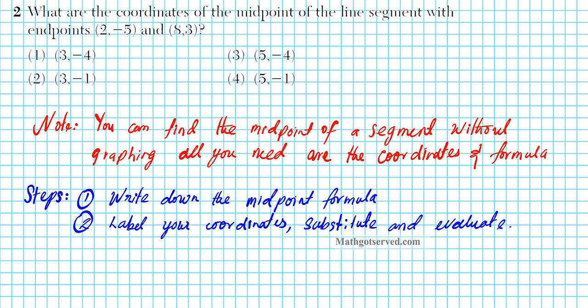All right, let's take a look at problem number 2. It reads: what are the coordinates of the midpoint of the line segment with endpoints 2, negative 5 and 8, 3? One thing you want to note when finding midpoints of a segment given the coordinates of the endpoints is that you do not need a visual. You do not need to graph the segment in order to determine what the midpoint is. You can simply apply the formula.